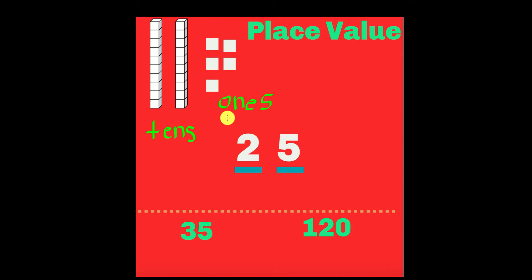So that's what place value means. We are now going to move on from reviewing our math vocabulary to actually looking at the number. So say we have the number 25. When we look at the number 25, one of the numbers is the tens place and one of the numbers is the ones place.